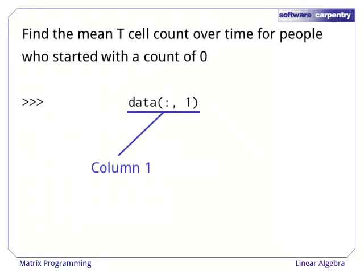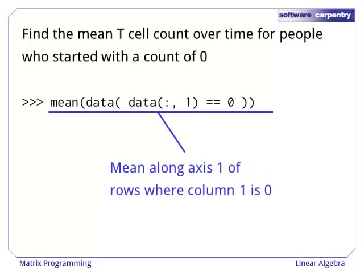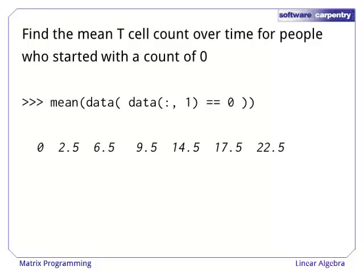Now let's find the mean T-cell count over time for those people. Once again, we start by selecting column 1 and testing it to create a Boolean mask. Using that mask as a subscript gives us the rows that have 0 in the first place. We can now use the mean function along axis 1, i.e. across all patients, which gives us the average behavior of patients who started with no responsive T-cells at all.